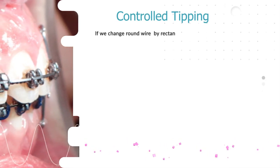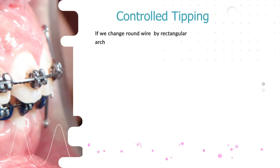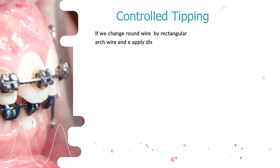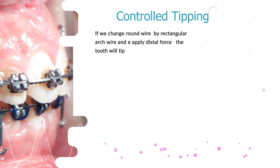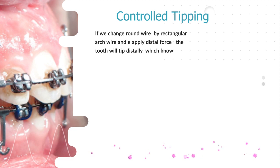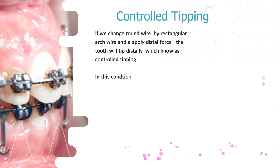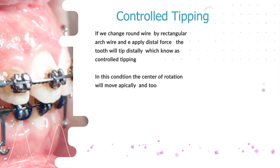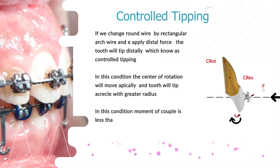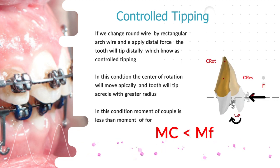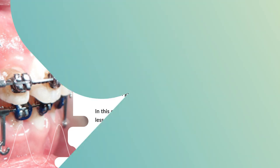If we change the round arch wire for a rectangular arch wire and we start to apply a distal force, the tooth will tip distally — known as controlled tipping. In this condition, the center of rotation will move apically and the tooth will tip around a greater radius. The moment of couple will increase but is still less than the moment of force.